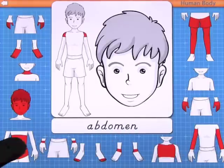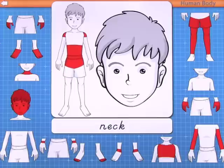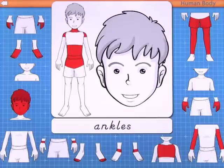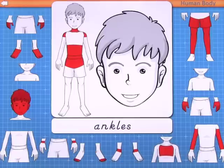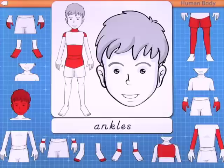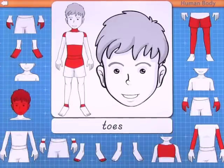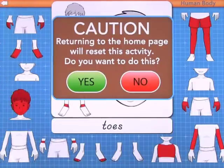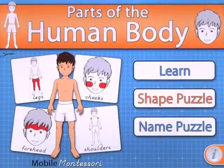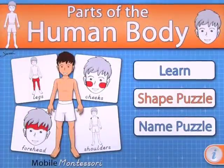You continue through each part — for example, abdomen and then ankles. If you touch the wrong one, the part will stay in its place, so you have to find the correct one. When you touch the right one, it moves into place. You complete the body and then the entire face. It really is a great learning tool — I highly recommend you take a look. It's called Parts of the Human Body by Mobile Montessori.